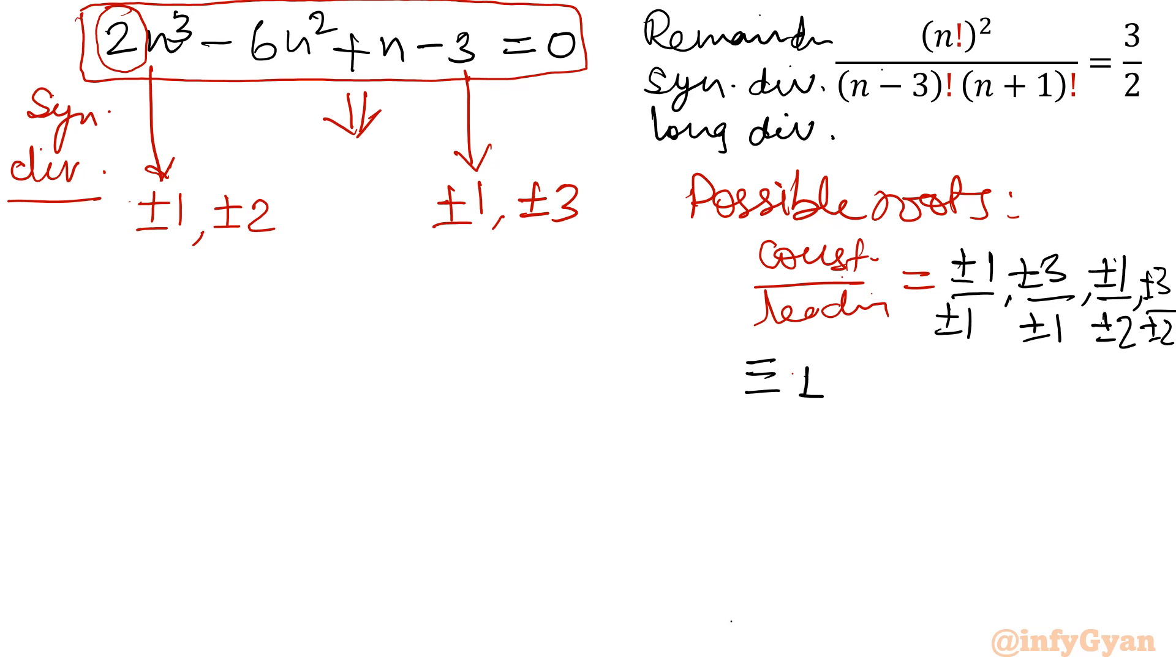So overall if you will find out, so we will be getting from first ratio numerator can be positive, denominator can be positive, so 1. Now numerator can be negative, denominator can be negative, so minus 1. Similarly, plus 3 minus 3, similarly plus half minus half, similarly plus 3 by 2 minus 3 by 2. So out of these 8 possible roots or solution, one value will satisfy or three values will satisfy to this equation.